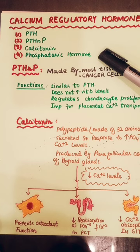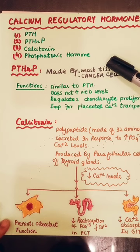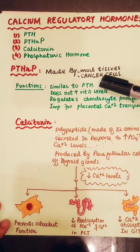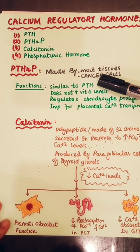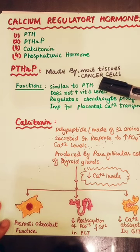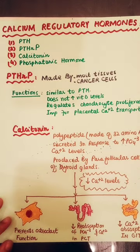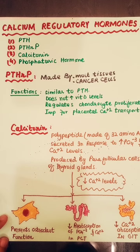We will study the parathyroid hormone — at what level it acts and where it is released. The parathyroid hormone-releasing peptide is produced by a lot of tissues and cancer cells. It has a function similar to parathyroid hormone in that calcium can be absorbed and bone resorption occurs. It increases calcium absorption from the kidney but does not increase vitamin D levels. It is important to remember that parathyroid hormone-releasing peptide has no role on vitamin D levels, and it regulates chondrocyte proliferation and placental calcium transport.